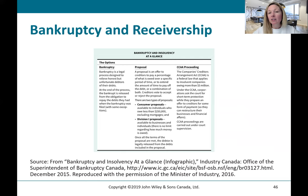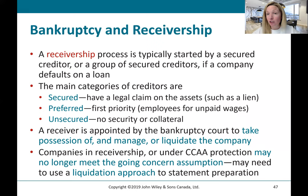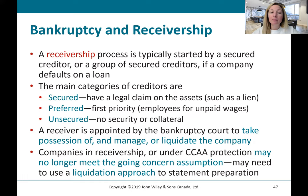A receivership process is typically started by a secured creditor or group of secured creditors if the company defaults on a loan. The main categories of creditors are: secured creditors, who have a legal claim on assets such as a lien; preferred creditors, who have first priority such as employees for unpaid wages; and unsecured creditors, who have no security or collateral. A receiver is appointed by the bankruptcy court to take possession of, manage, and liquidate a company. Companies in receivership or under CCA protection may no longer meet the going concern assumption and may need to use a liquidation approach to preparing their financial statements.